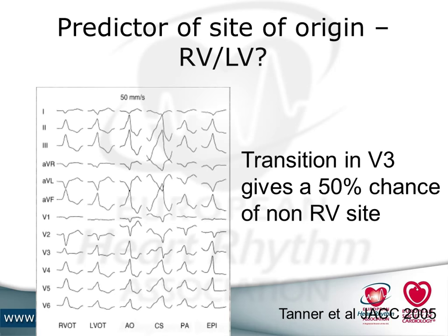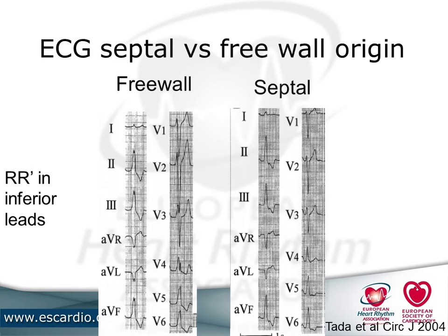Let's talk about differentiating right and left ventricle. A transition in lead V3 gives you a 50% chance of having a non-right ventricular site. It's unusual to have a positive QRS in lead V3 in RVOT origin — normally transition across chest leads occurs much later in RVOT tachycardia, so V3 is fairly negative. Having a positive V3 or transition in V3 gives a fairly high chance of a non-right ventricular site — alarm bells should ring.